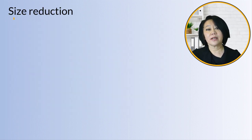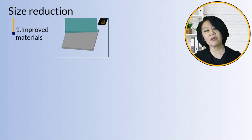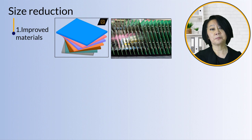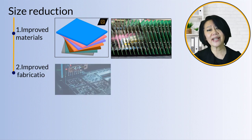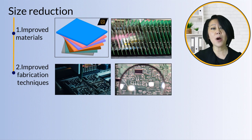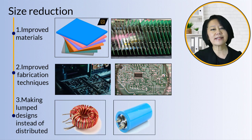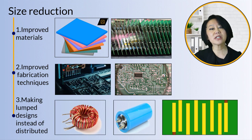Size reductions can be accomplished in many ways: improved materials allowing for smaller designs, for instance with materials of higher permittivity, improved fabrication techniques to fit more components in smaller volumes, making lumped designs instead of distributed, and integrating various components in the front-end for size reductions of the entire full system.